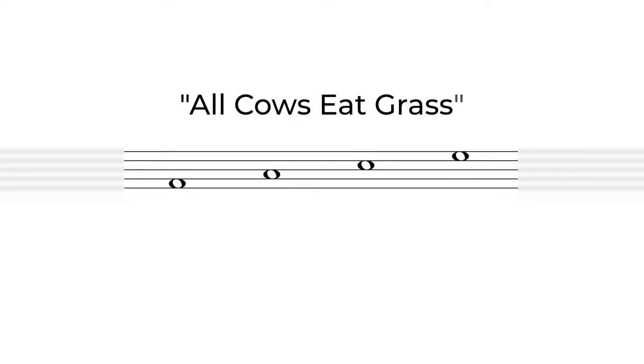Now let's move on to the spaces. We have four spaces in between our five lines, and we have another phrase to know where these notes go: All cows eat grass. Again, we take the first letter of each word — A, C, E, and G. In the same way we labeled the notes on our lines, we're going to plug in our space notes starting from the bottom space and moving up.